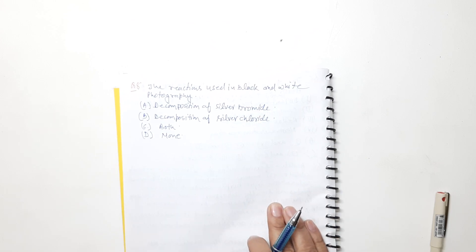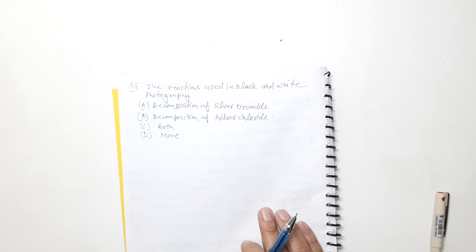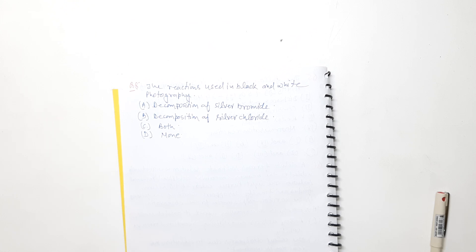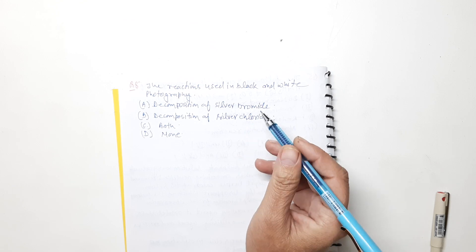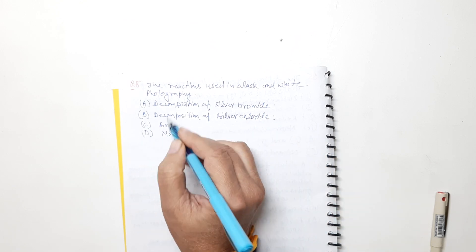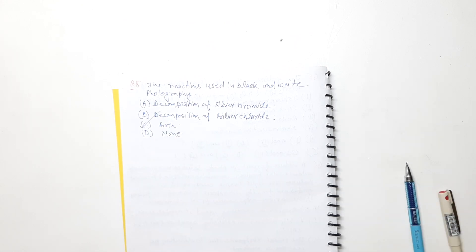The reaction used in black and white photography — those who have studied this chapter well will know about silver bromide and photography. Decomposition of silver bromide is a correct option, and decomposition of silver chloride is also a correct answer. Since both are correct, option C is our correct answer.